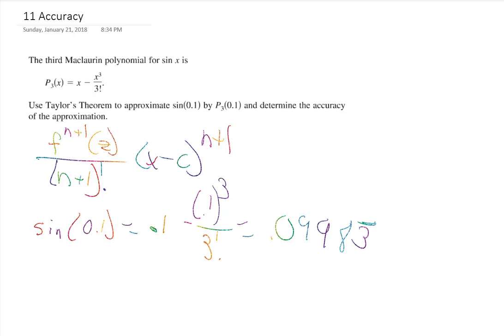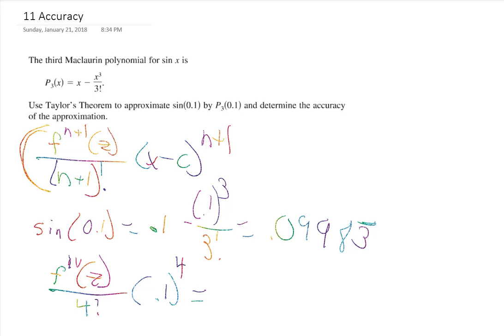How close to exact is that? Using the Lagrange form of the error, it's the fourth derivative of our function at some number z, over 4 factorial, times 0.1 to the fourth power (since c equals 0). The derivatives of sine cycle through cosine, negative sine, negative cosine, and back. The maximum value sine or cosine can ever be is 1. So the largest the error can ever be is 1 over 4 factorial times 0.1 to the fourth.